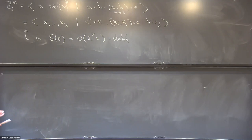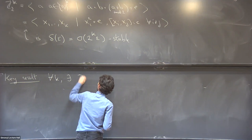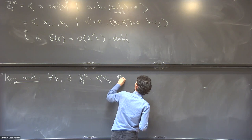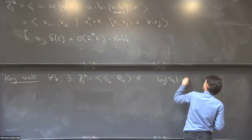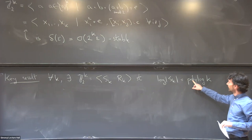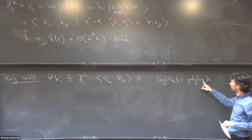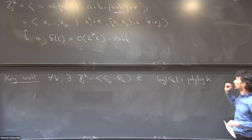The key result is: for every K, there exists a presentation of Z_2^K written as (S_K, R_K) with the following properties. The number of generators is 2^(log K)^2 — much smaller than 2^K, but also bigger than K. Think of it as quasi-polynomial. Similarly for the number of relations. The modulus of stability is polynomial in K times epsilon^(1/C) for some constant C. It's an intermediate result between the two extreme presentations.